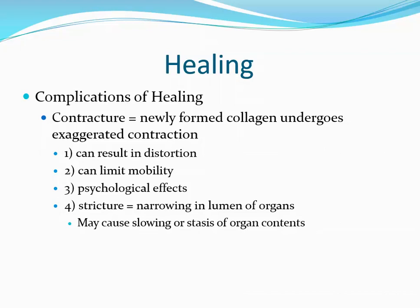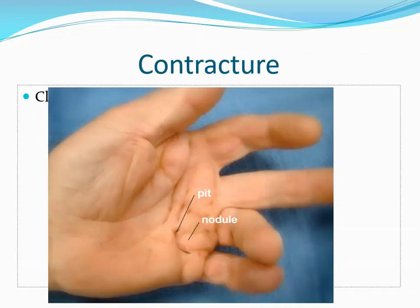Sometimes healing doesn't go as planned and there are complications. A contracture occurs when newly formed collagen undergoes exaggerated contraction when damage is extensive, resulting in distortion — typically seen with burn disfiguration. It may also limit mobility, for example burns on the neck and hands. Contractures can have psychological effects especially when the disfiguration involves the face, and sometimes result in a stricture — a narrowing in the lumen of tubular organs that may cause stasis of organ contents.